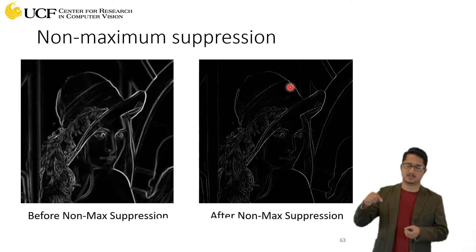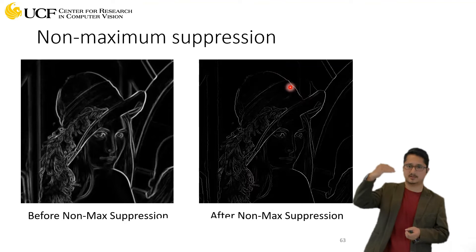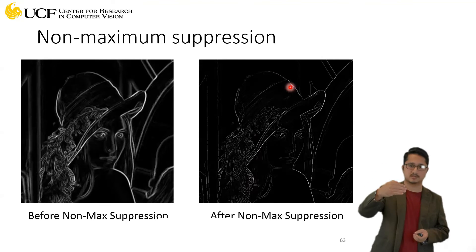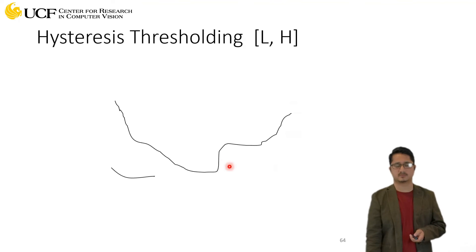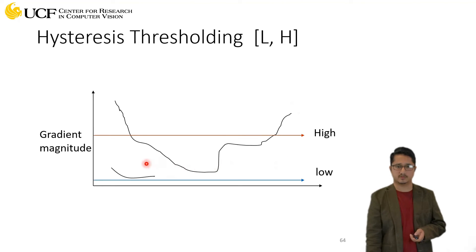It's not that one pixel is an edge, then there's discontinuity, then another is an edge. It's a continuous edge, and that's the intuition here. We try to find those connected components in the edge map.